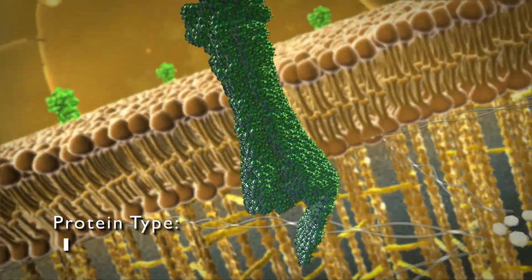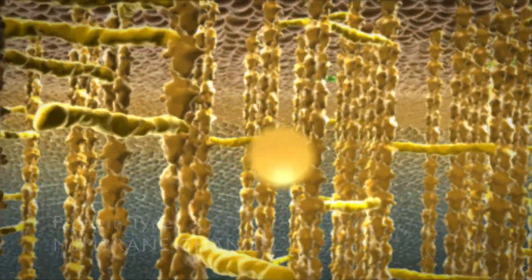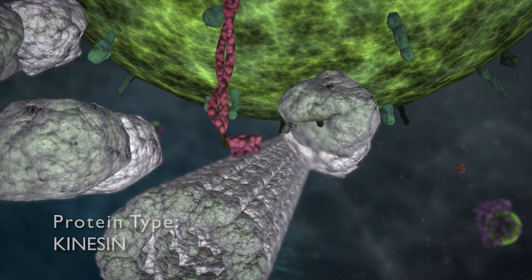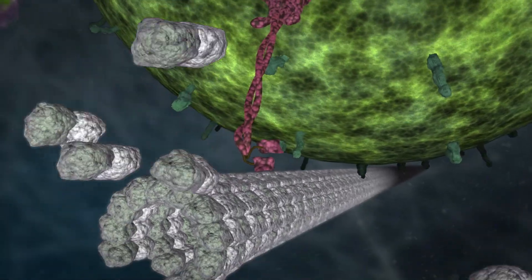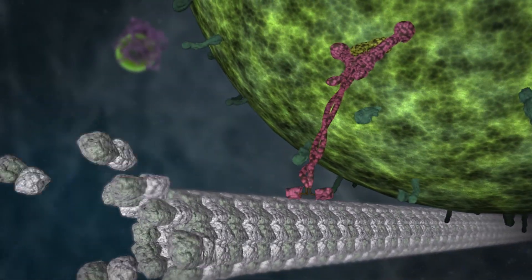They control the passage of electrolytes and nutrients through the cell membrane, and tow containers filled with cargo over scaffolds, also made of proteins, that auto-assemble and extend to wherever they are needed in the cell.